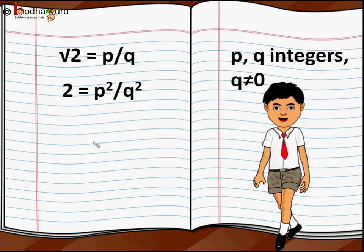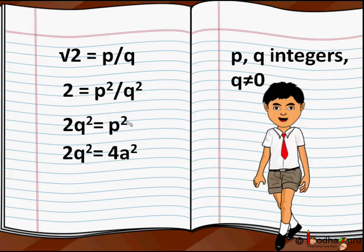We will get square root of 2 whole square equals 2 equals p²/q², which means 2q² equals p². It means p² is divisible by 2, so p is also divisible by 2. This means p is an even number.